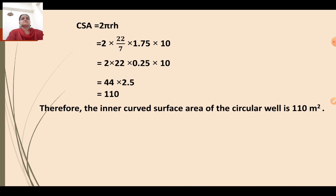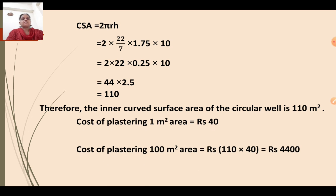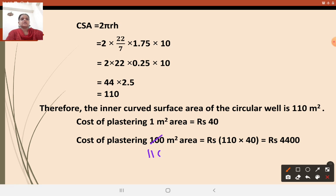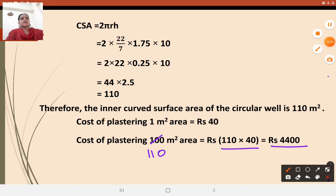The inner curved surface area of the circular well is 110 meter square. Now for the cost of plastering: the cost of plastering 1 meter square equals Rs. 40. Therefore the cost of plastering 110 meter square equals 110 into 40, which equals Rs. 4,400. We have covered 3 sums today and we will continue with Exercise 13.2 in the next period. Thank you and practice this.